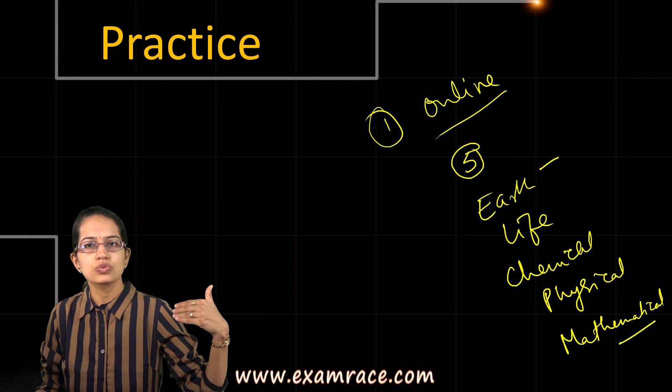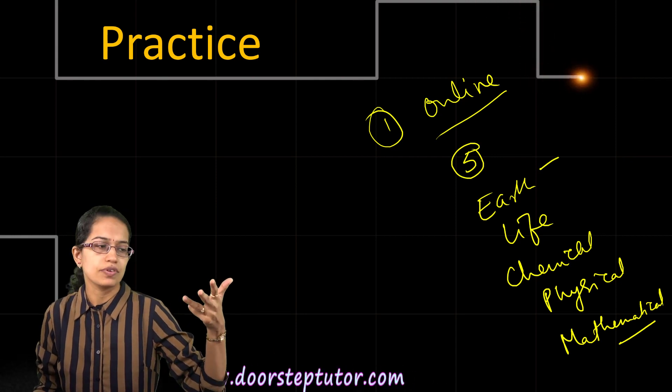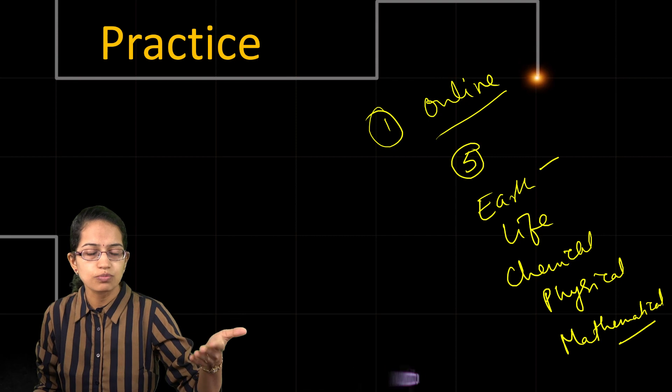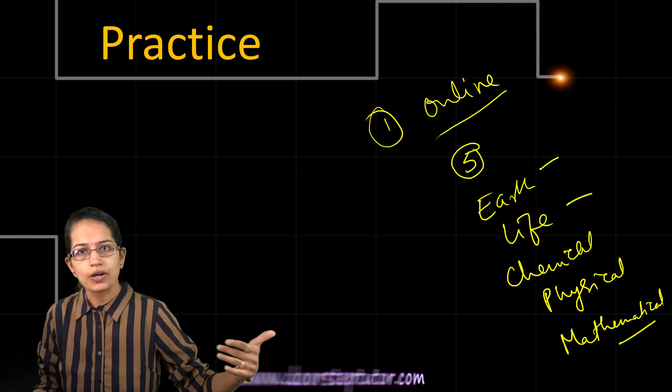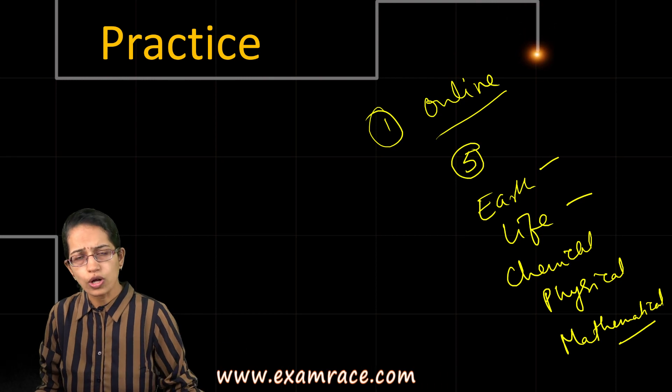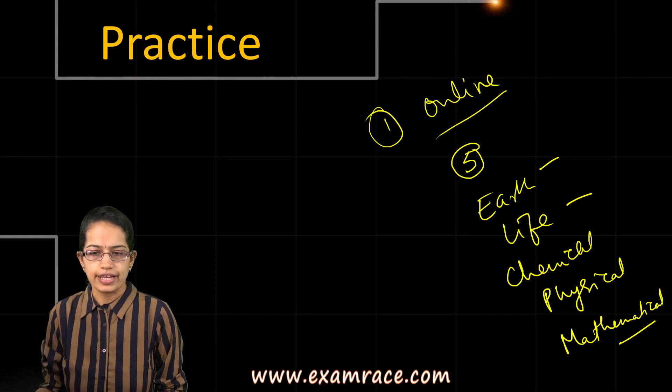Earth Sciences is open to students from Climatology, Oceanography, Geography, and Geology. Life Sciences covers Botany, Zoology, Biochemistry, and Nanotechnology students.